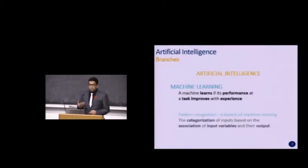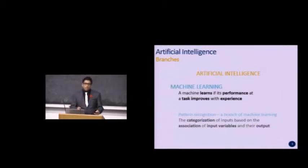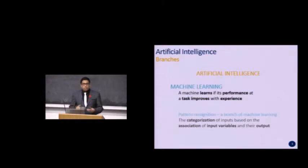A machine is said to learn if its performance of a particular task improves over time and experience. A human analogy would be riding a bicycle — the first time you ride, you tend to fall, but as you keep practicing, you fall less and less until you can fully ride a bike.